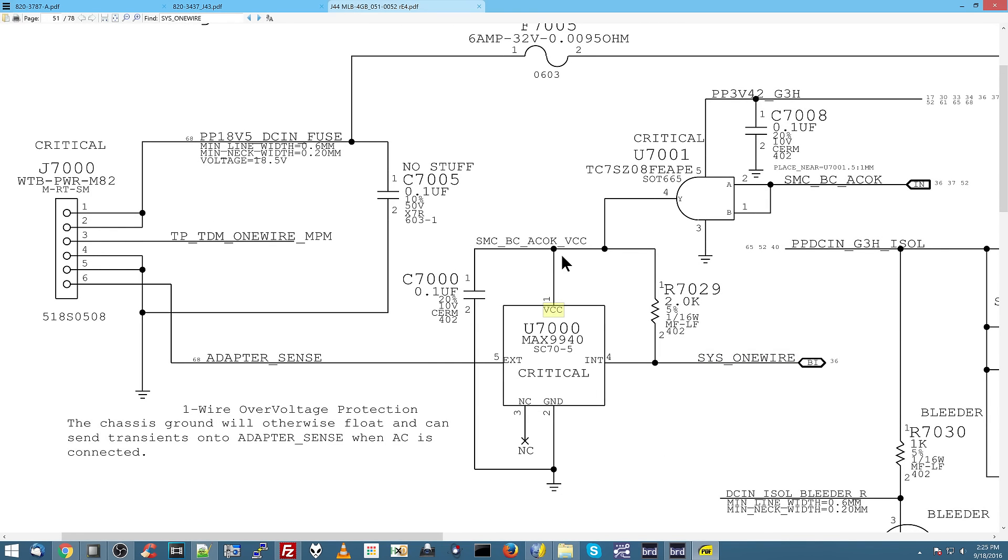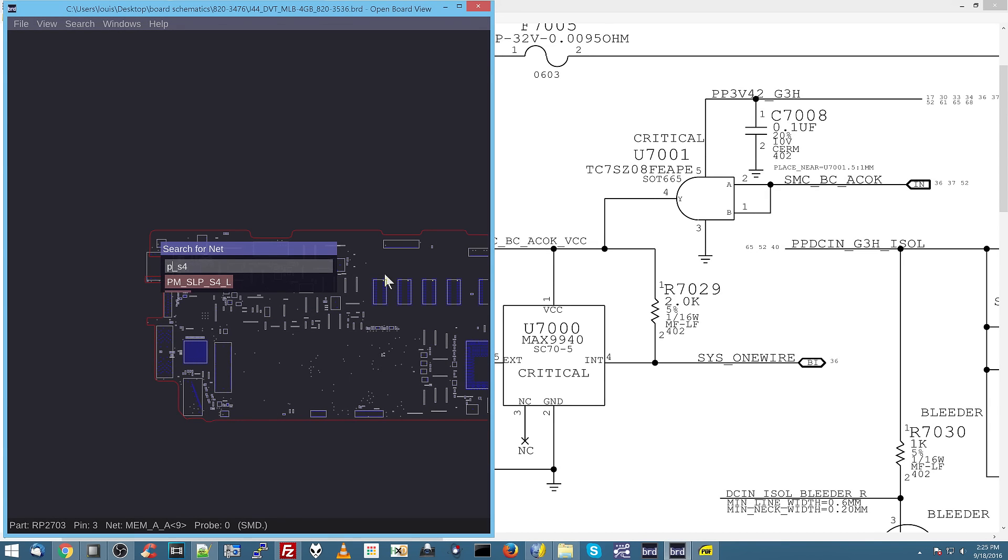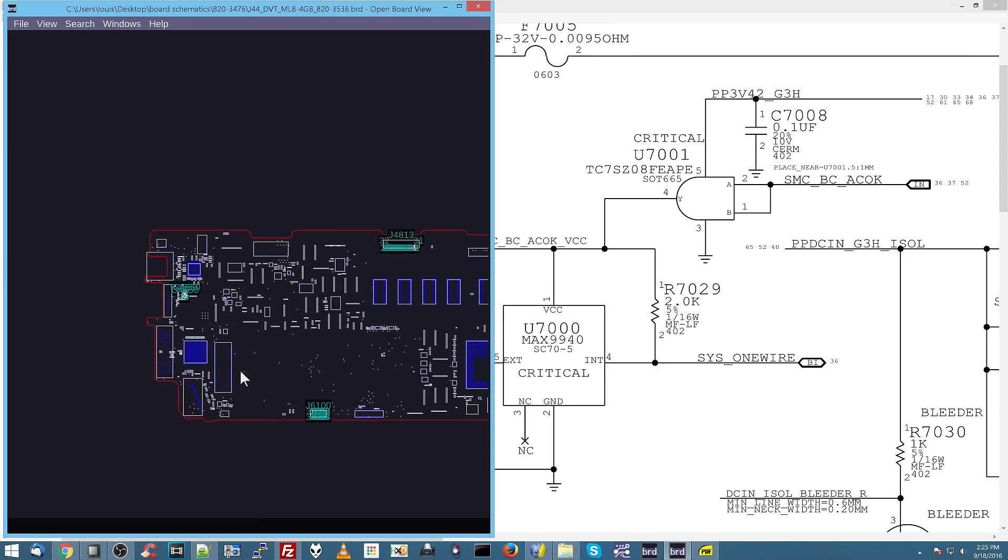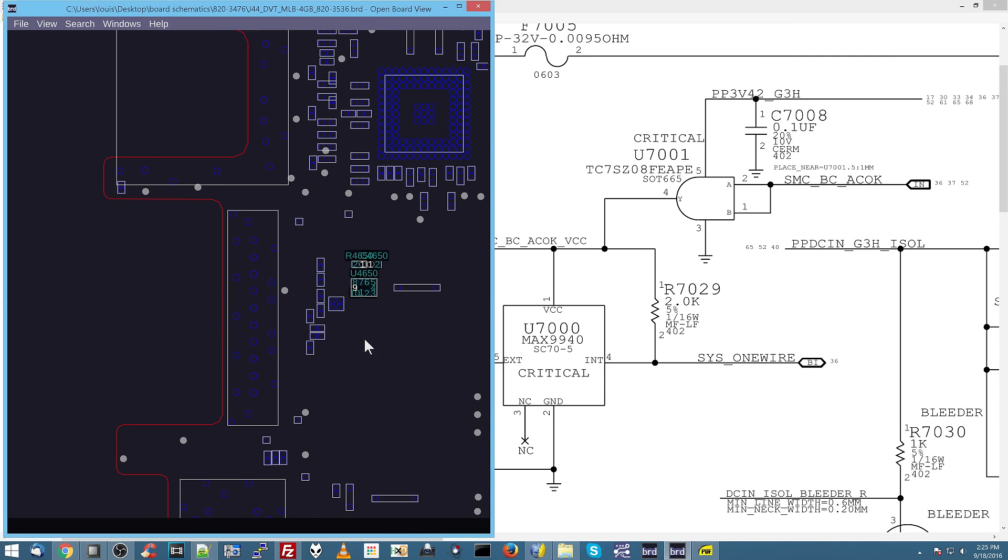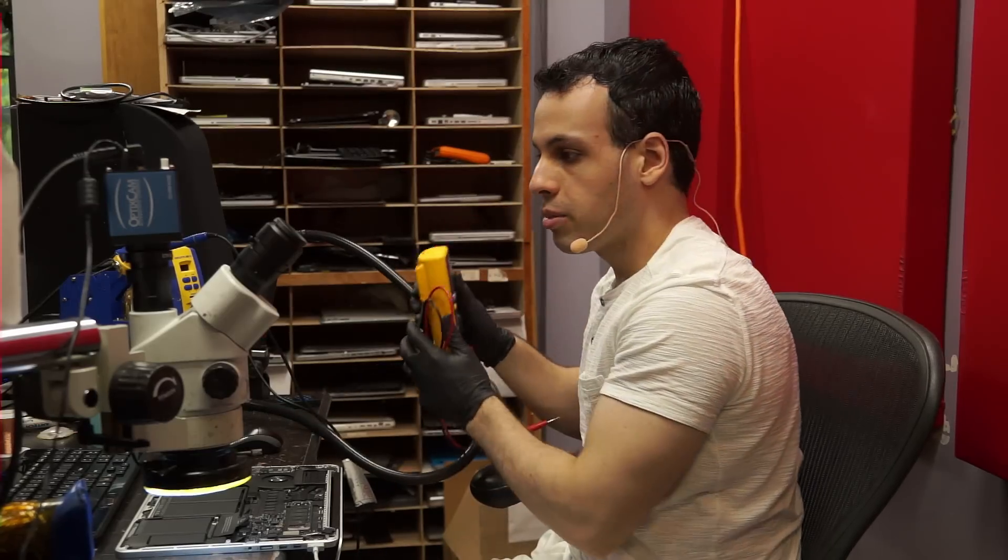So, we need 3.42 volts for that to happen. Now, if I were to try and measure PP3V42 on this motherboard, let's see if there's any place in the top of the board I can measure PP3V42_G3_hot. I'm going to try and measure this, and we're going to see what we get. I'm going to put the multimeter over here and hope that you can see it, but you probably won't be able to see it.